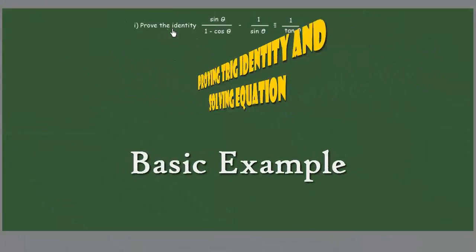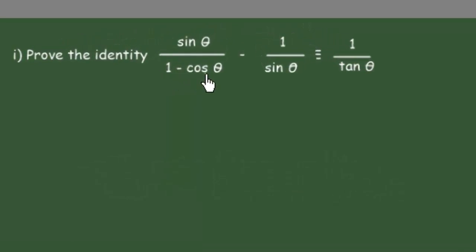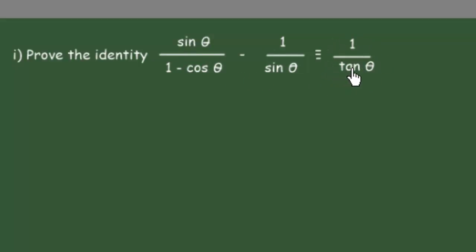Hi guys, in this video we will prove this identity: sine of theta over 1 minus cosine of theta, minus 1 over sine of theta, is equivalent to 1 over the tangent of theta. We have two different ways to do that — we can start by expanding the left side or expanding 1 over tan theta — but the easiest way is to go from the left side to the right, and that's what we're going to do right now.